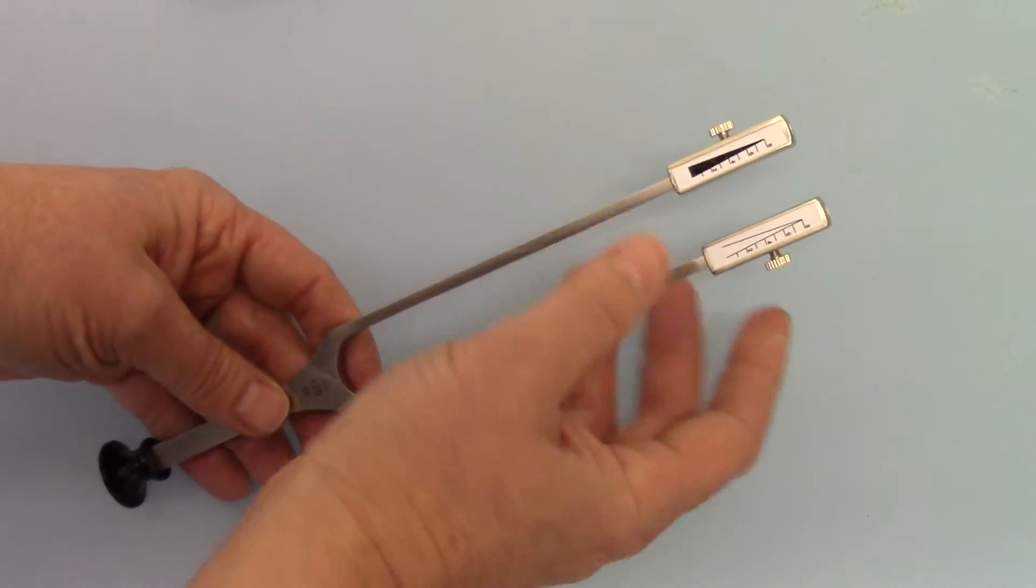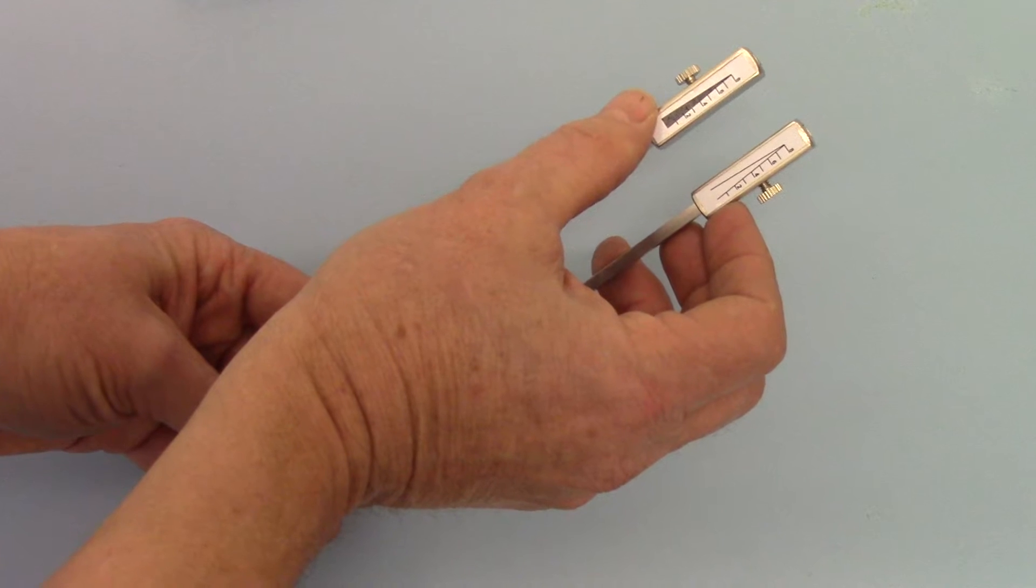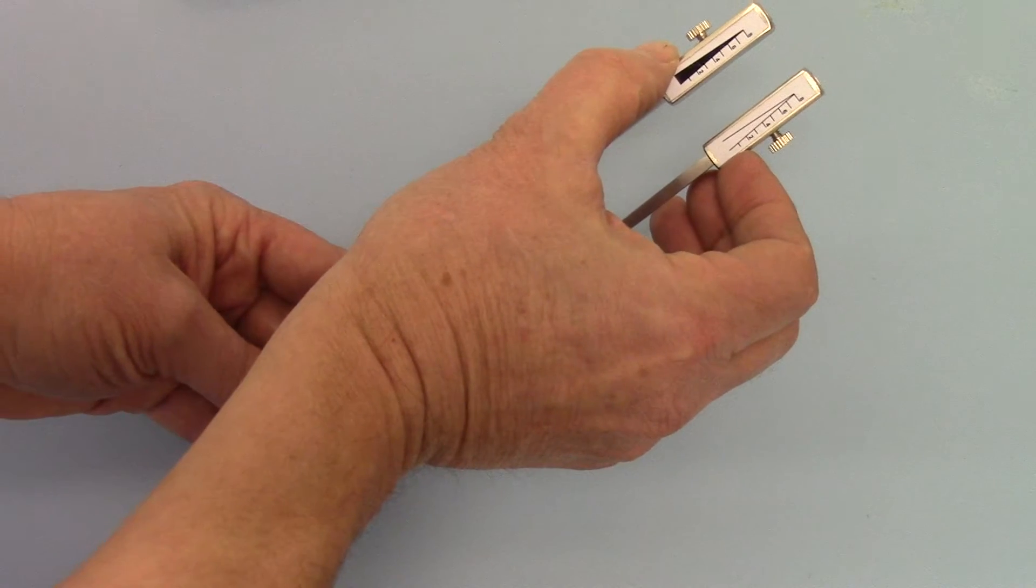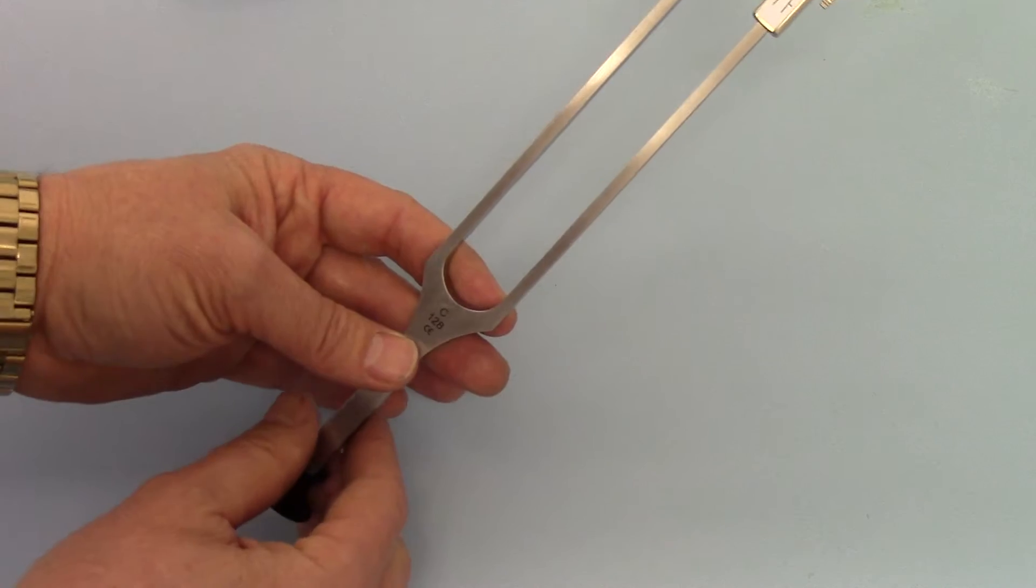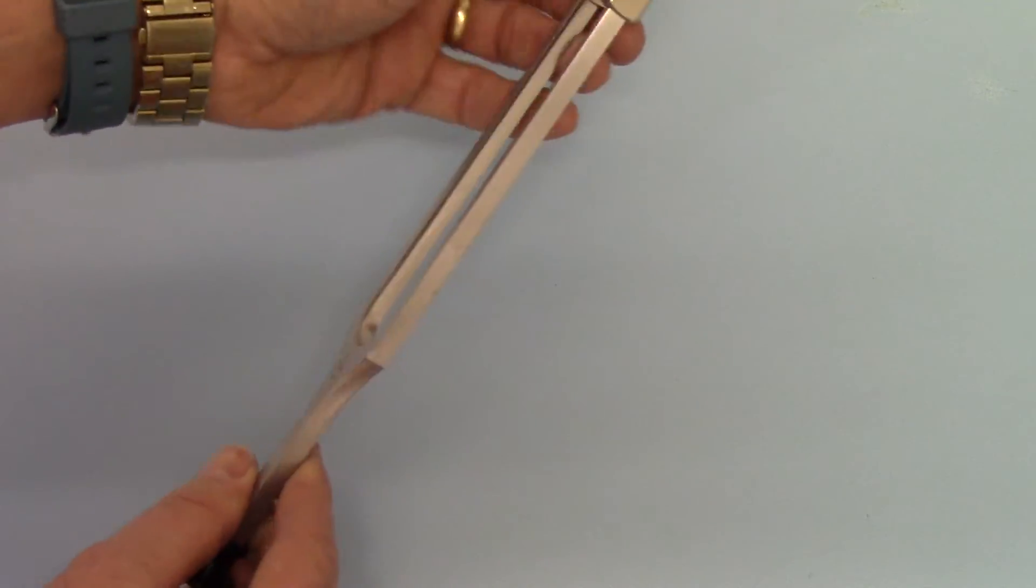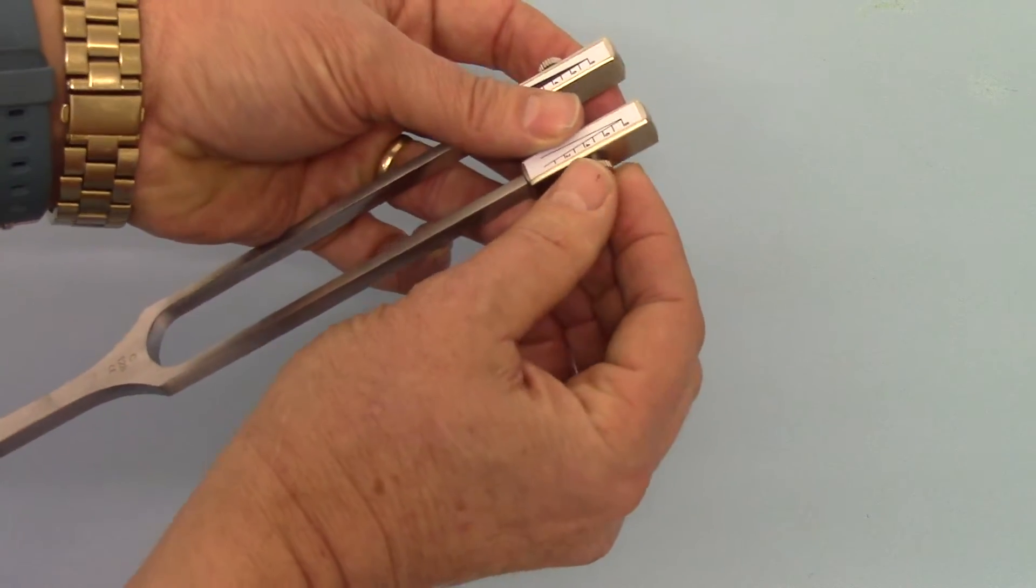And then on the tines you have the adjustments here for going from C64 up to C128 in terms of the vibration. So those are fully adjustable on these screws on the side.